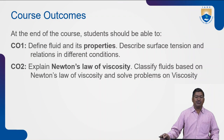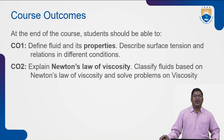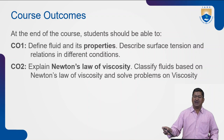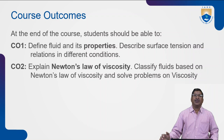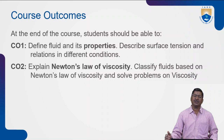Before going to this topic, the course outcomes related to this are: at the end of the course, the students should be able to define what a fluid is and what are its properties. Course outcome one is that the student can define what a fluid is and what are its properties. The student can also describe surface tension and its relations in different conditions. Surface tension is the tension that exists at the top surface of any fluid, like water.